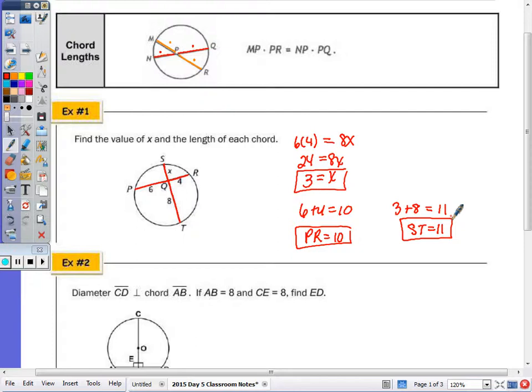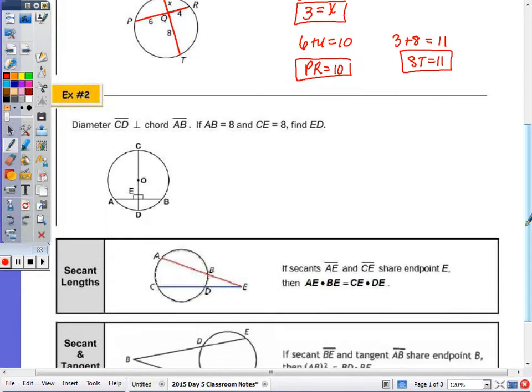Number two, we have diameter CD perpendicular to chord AB. If AB is equivalent to 8, the length of AB, and the length of CE is equal to 8, find ED. So CD is 8, E to D, let's call x. Now AB, the length of AB is equal to 8.